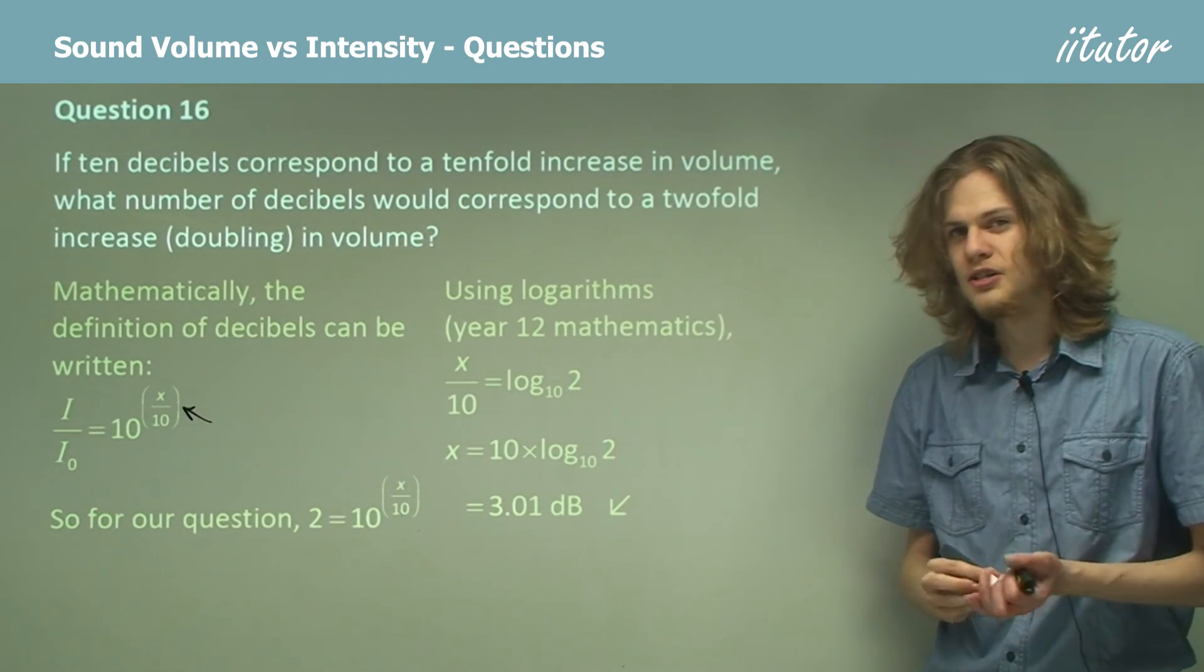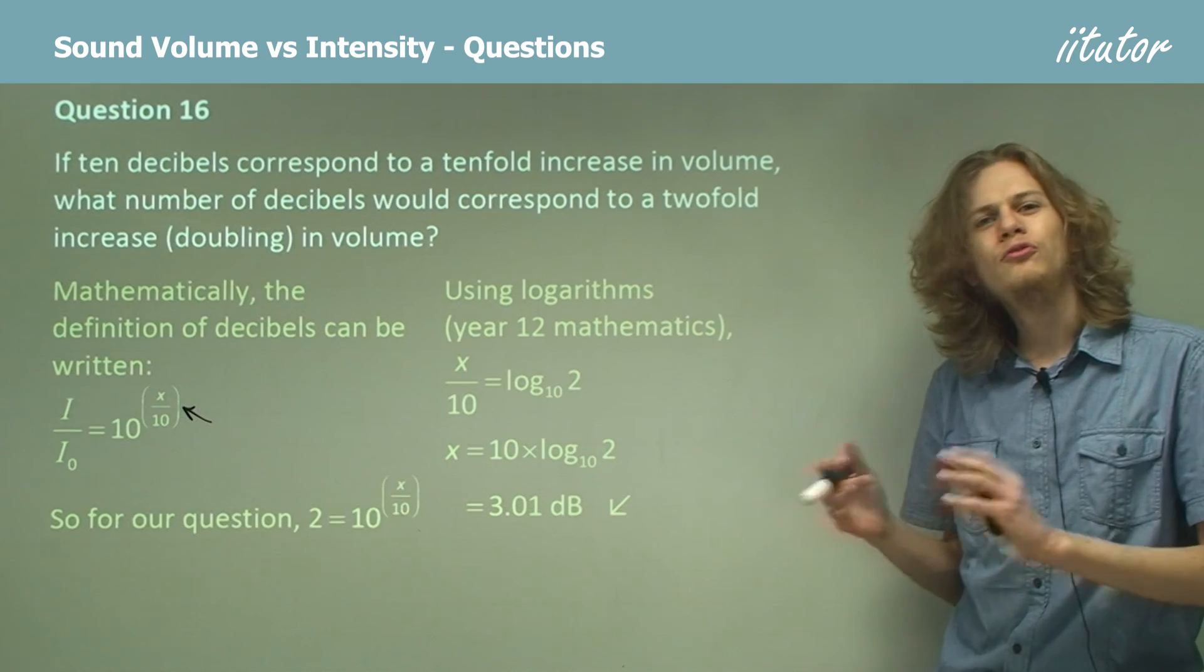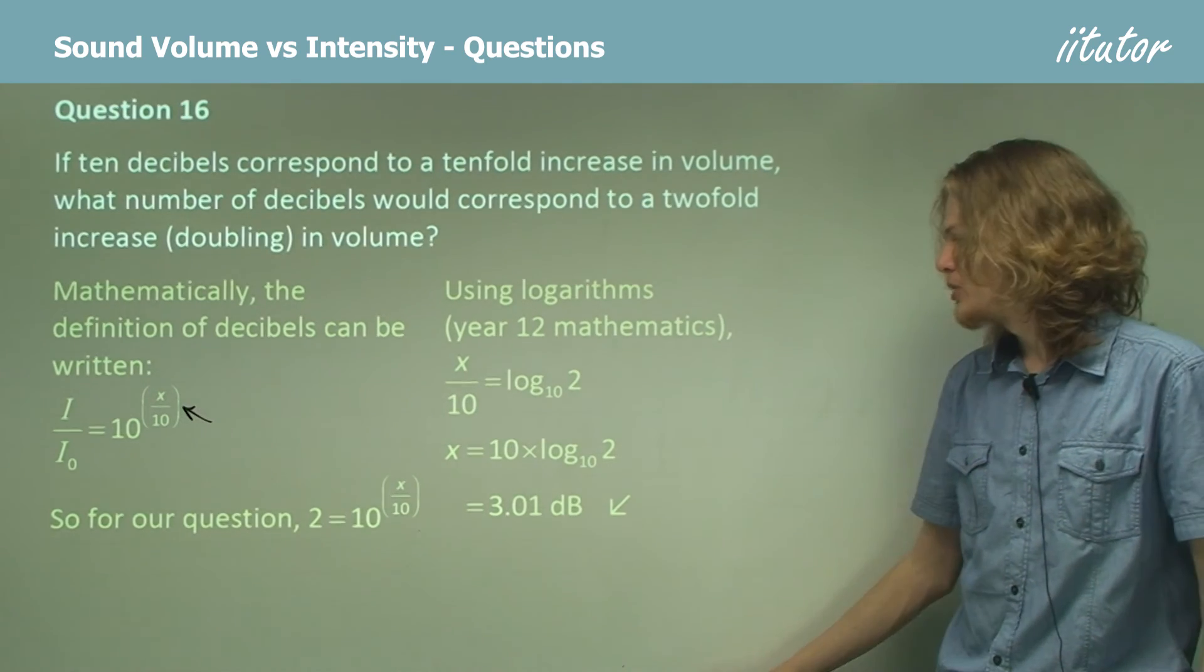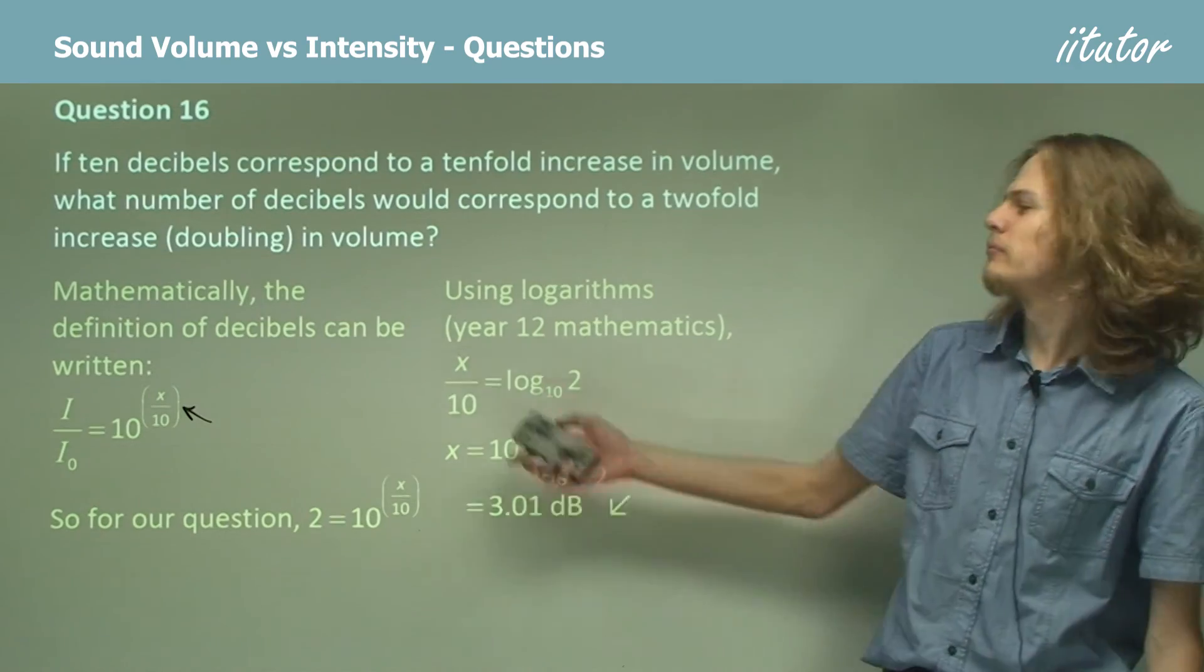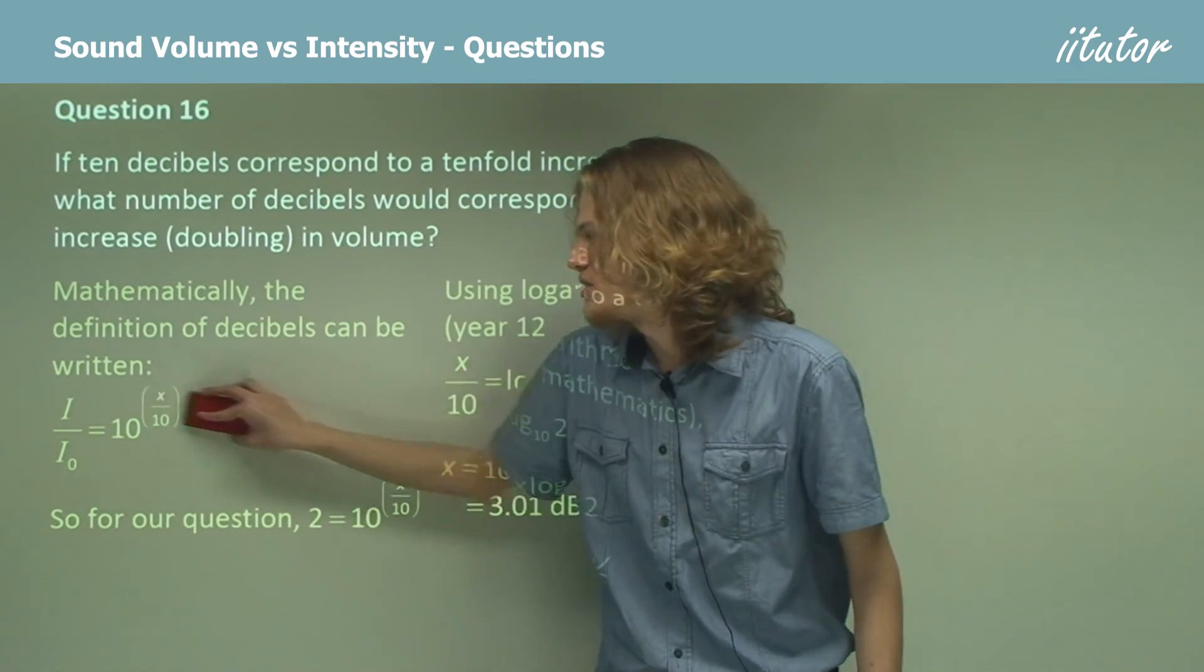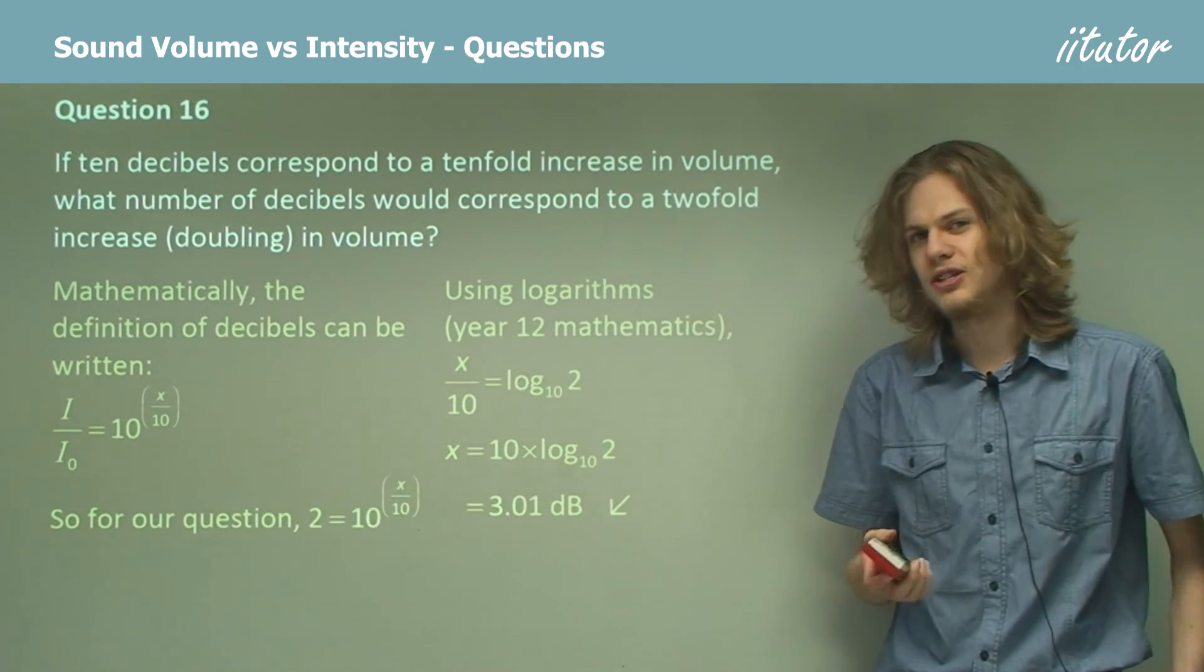Now 3.01 is a bit of an approximation, but you should get a number that is very close to 2, which means that increasing the volume of the sound by 3.01 decibels will double its intensity, assuming its frequency doesn't change.